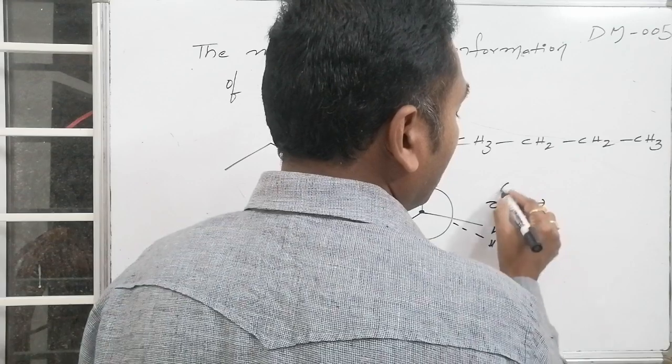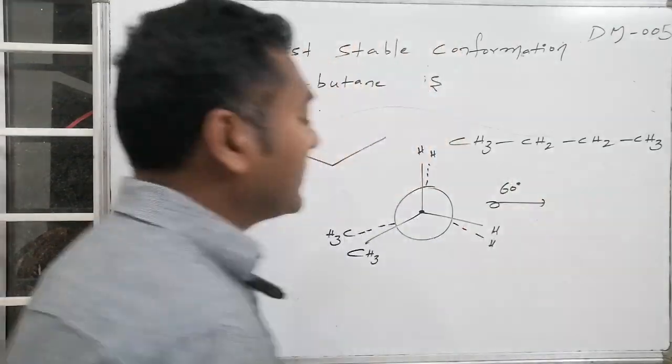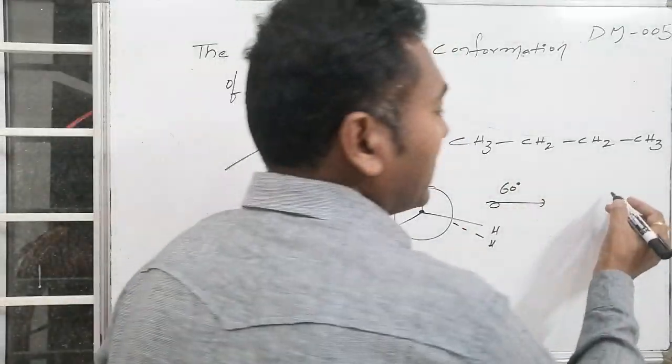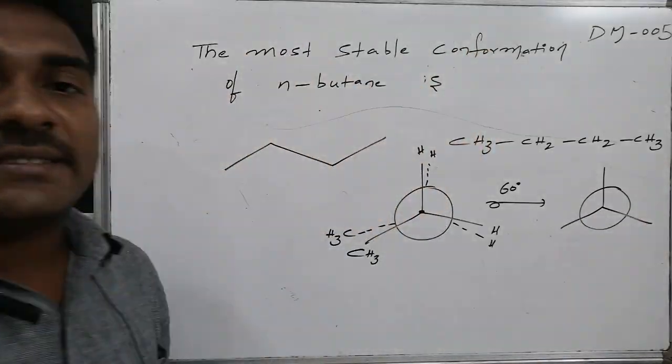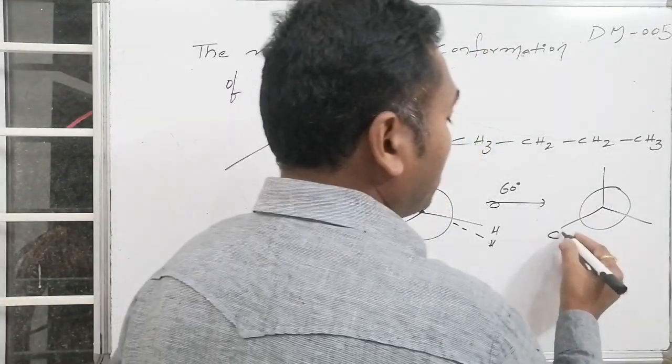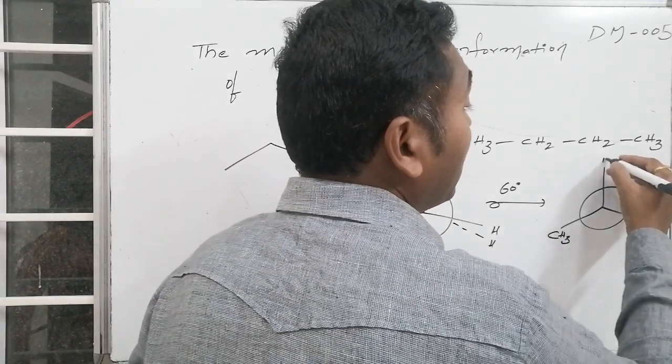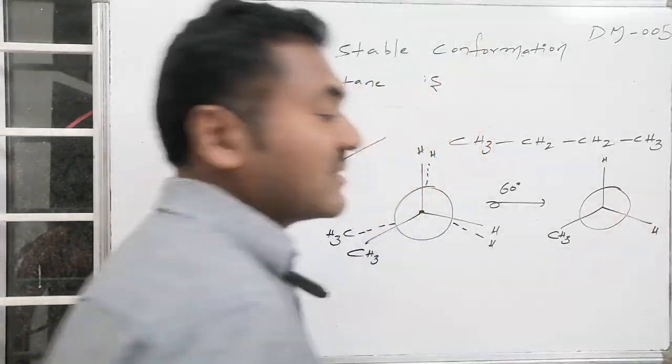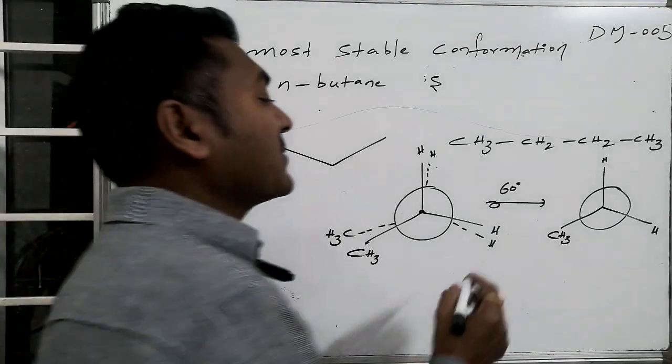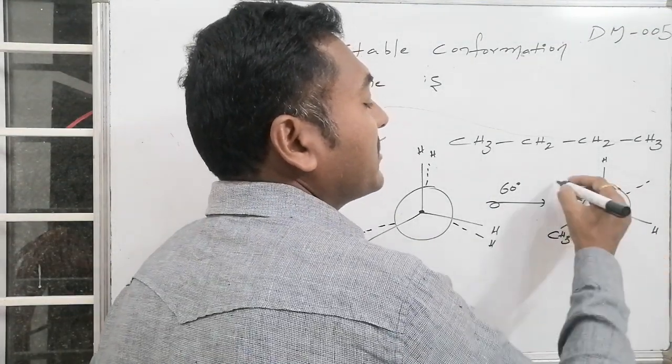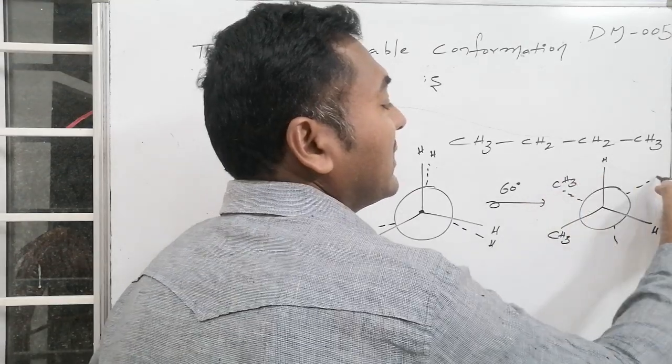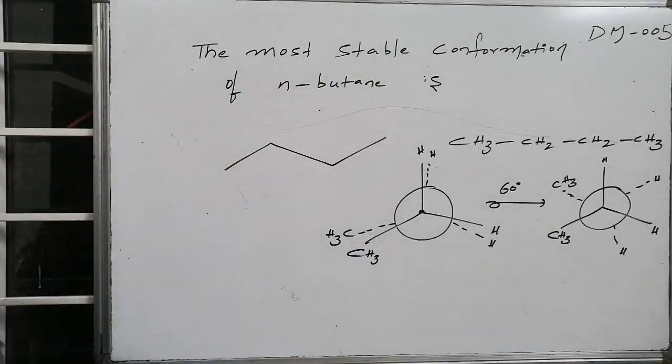If I rotate this one by an angle of 60 degrees, then let us keep the front carbon atom as it is. Front carbon atom is as it is whereas back we will rotate by a dihedral angle of 60 degrees. To make the dihedral angle of 60 degrees here, this will become one connectivity, this will become one connectivity, this is methyl, this is hydrogen and this is also hydrogen.